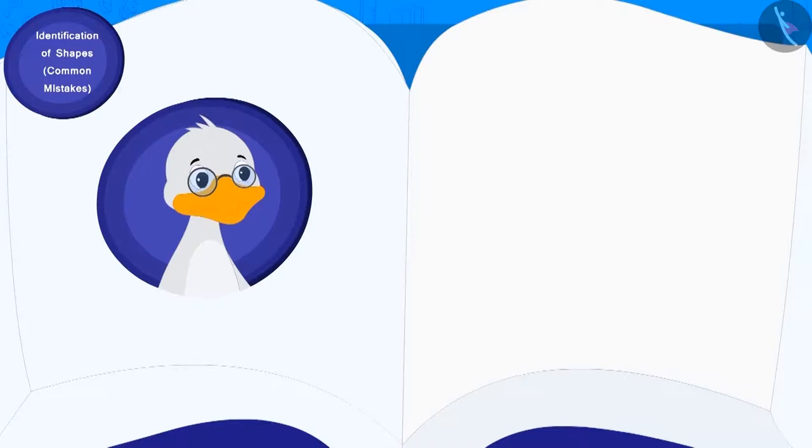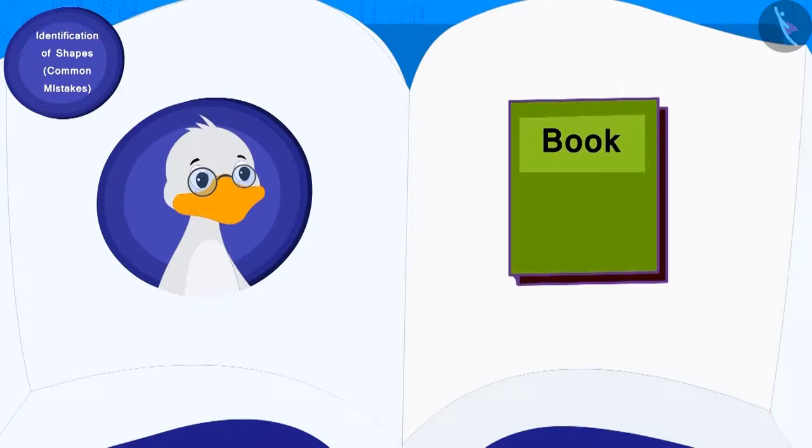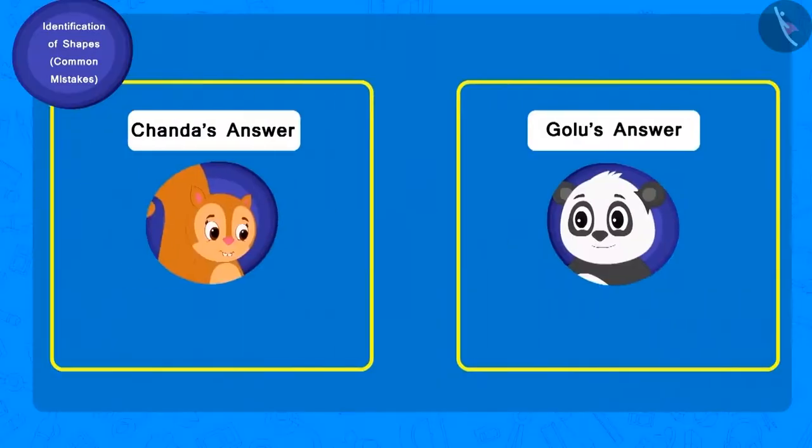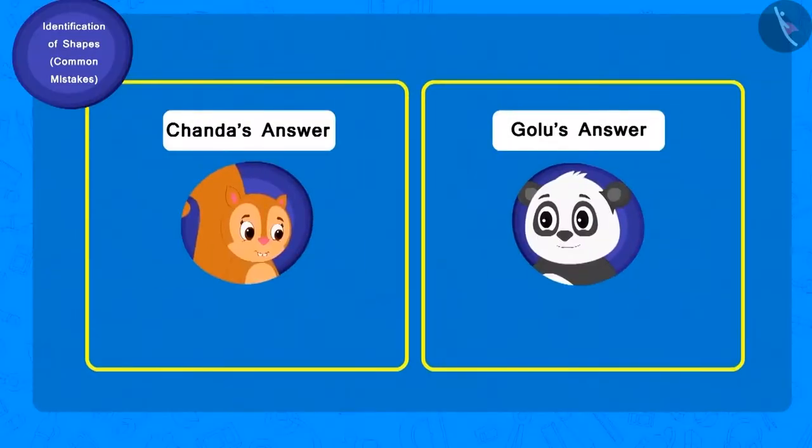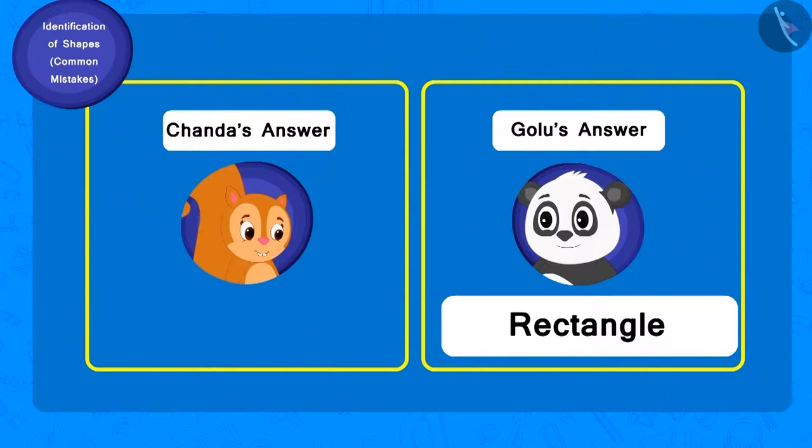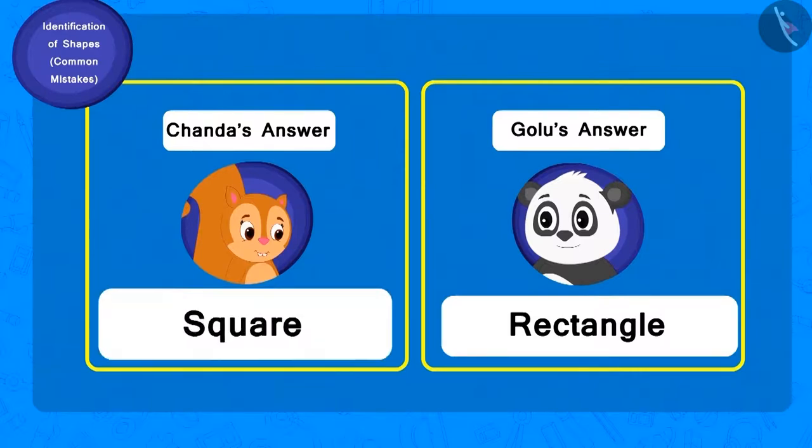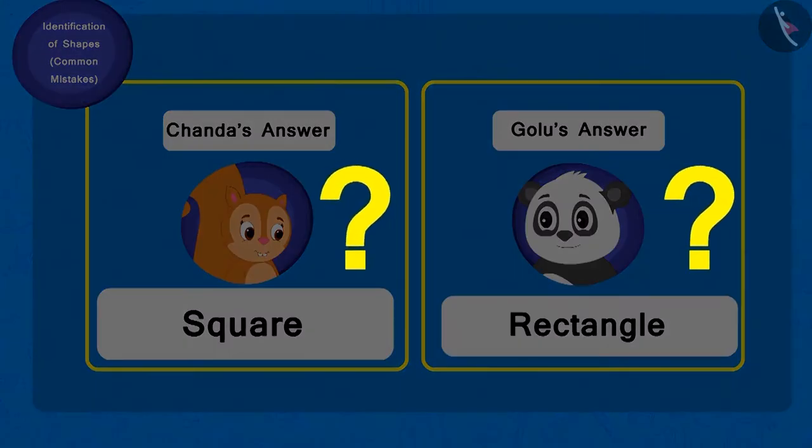Now Chacha showed a book and asked, what shape is it? Golu immediately wrote rectangle as his answer. And Chanda wrote square. Children, can you tell whose answer is correct?